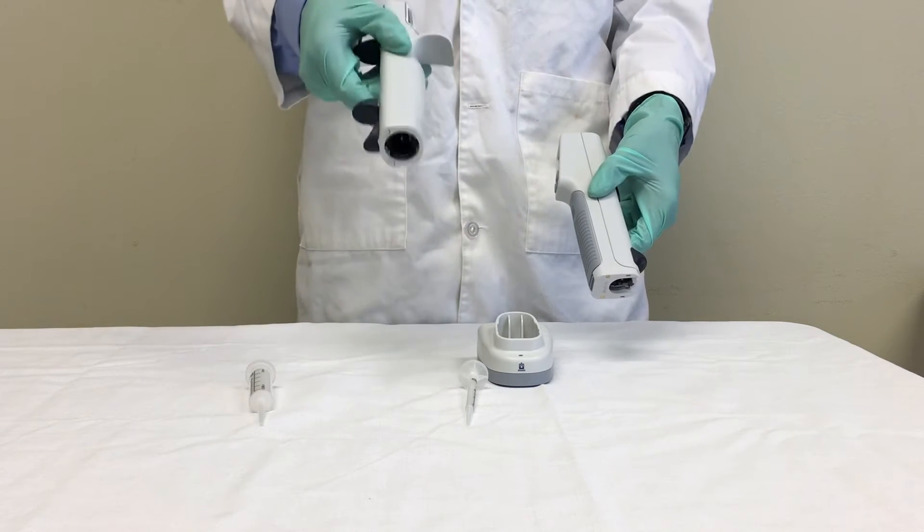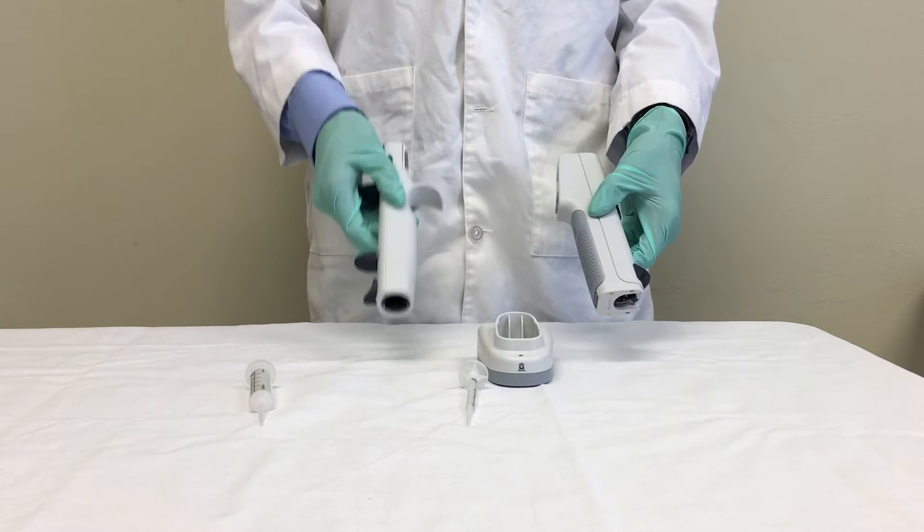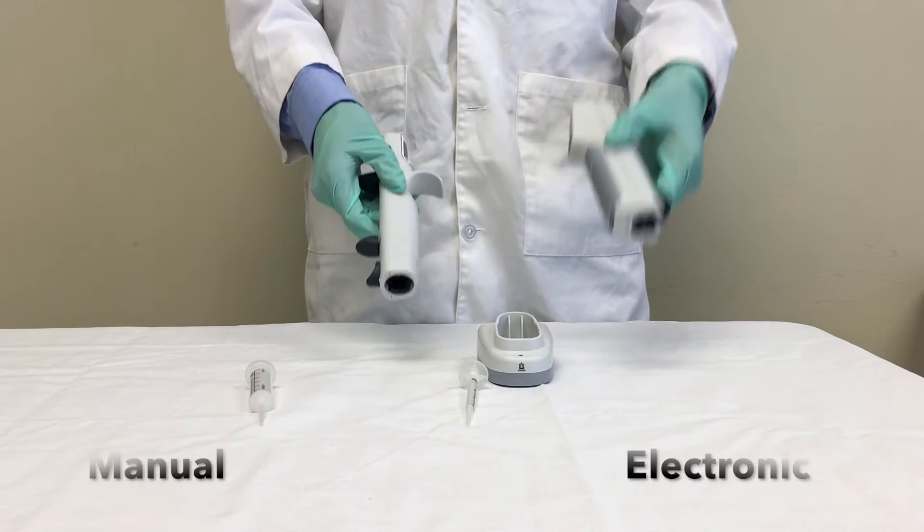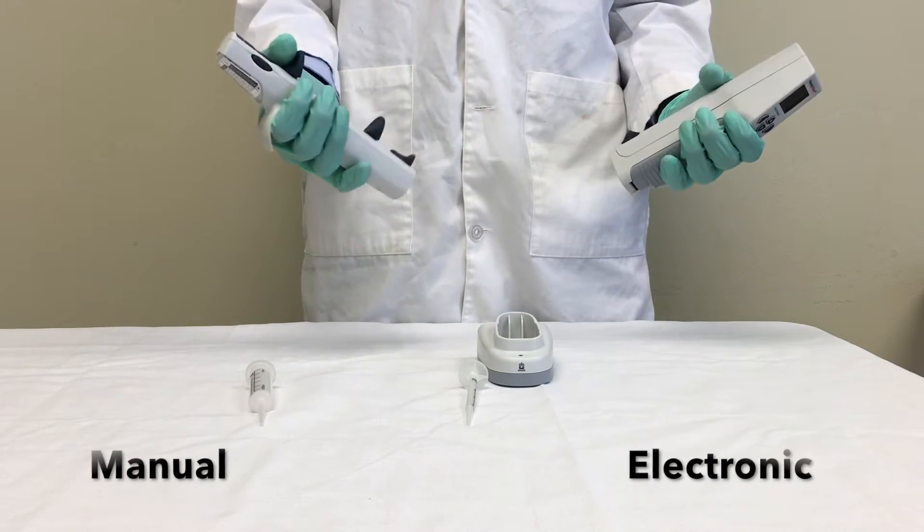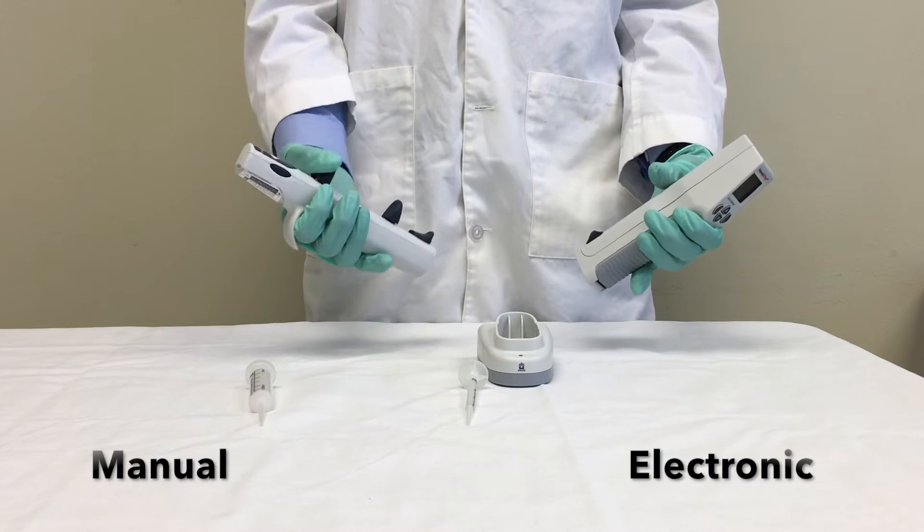We offer two types of repeating pipettes here at Sycamore: the Brandtek Manual HandyStep S and the Brandtek Electronic HandyStep S. Both are single channel pipettes that can handle up to 50ml of liquid. Both are extremely ergonomic and accurate.